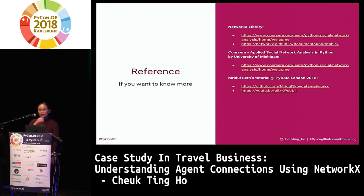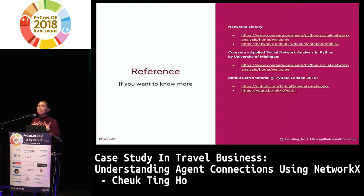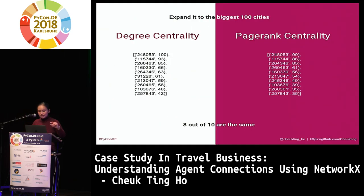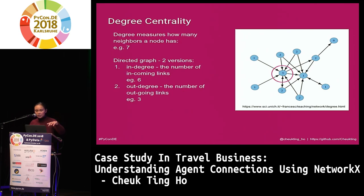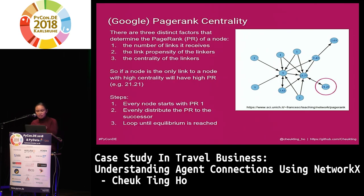Question: You showed the difference between PageRank and degree centrality, but it wasn't really that much of a difference — so why did Google take PageRank and not degree centrality? Answer: In my case it's very similar, but it's not the same for every network. If you have a case like the example network, it will make a difference. For in-degree, this circled node only got one, but for PageRank it got 21.21 — that's quite a contrast, really different.